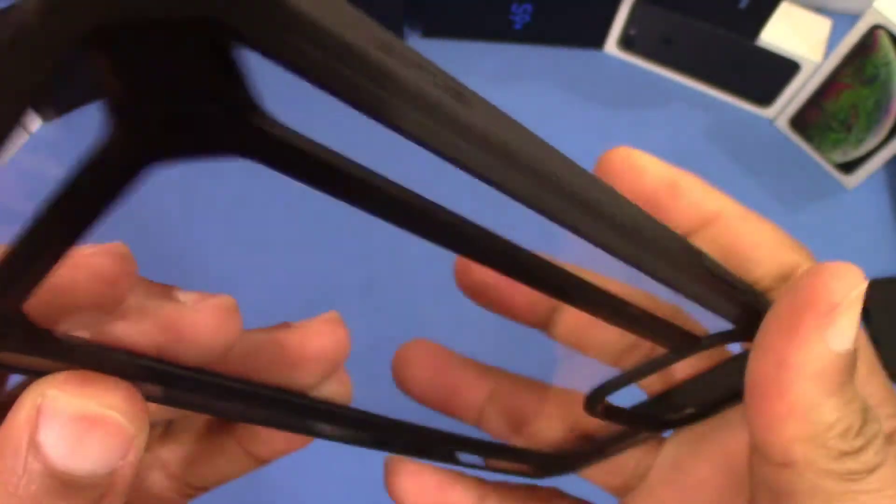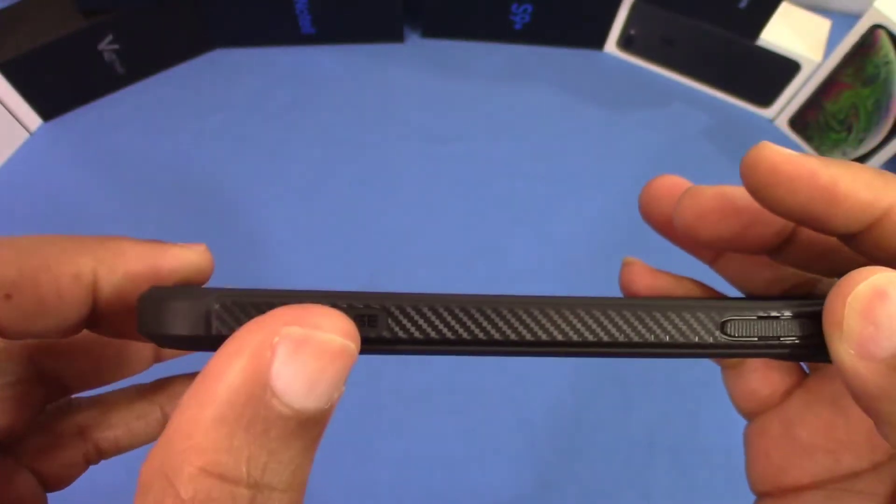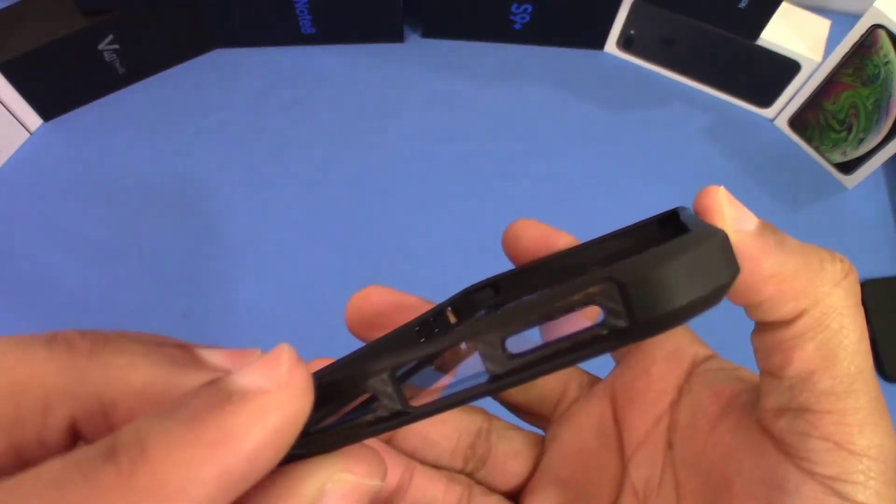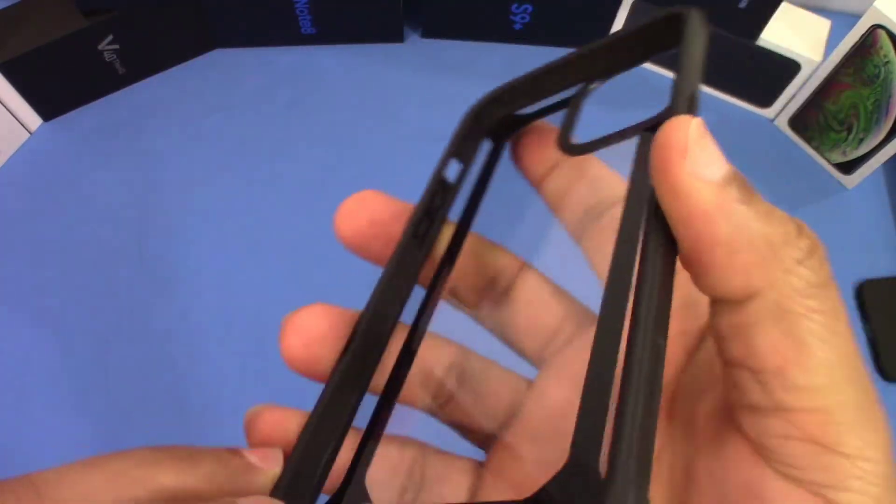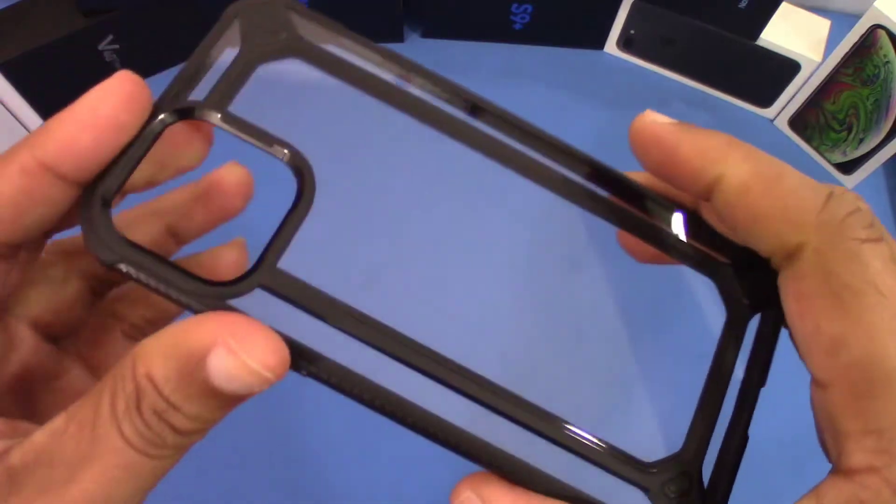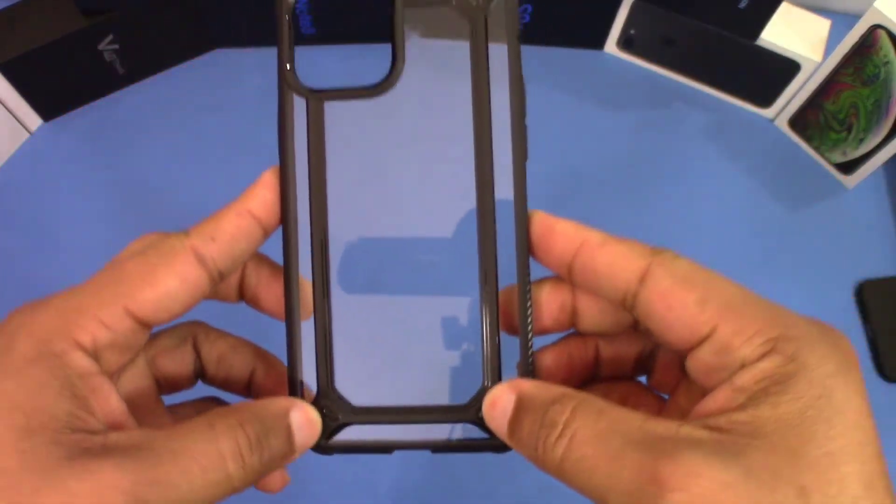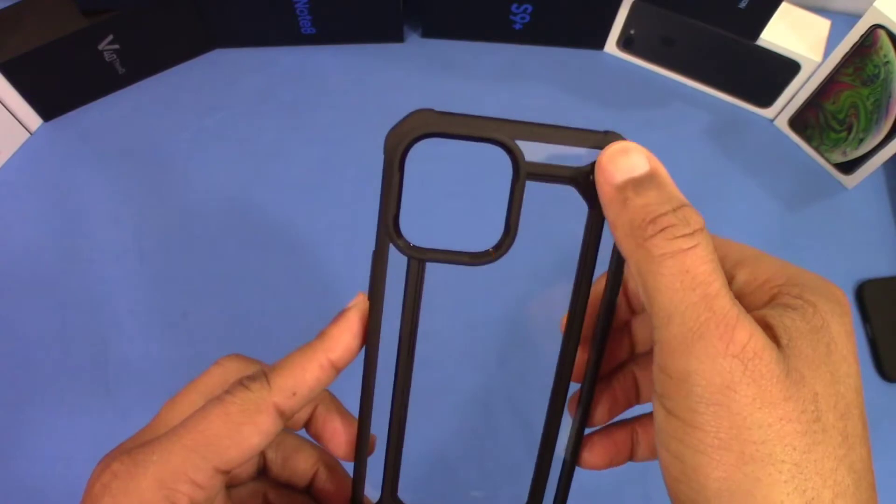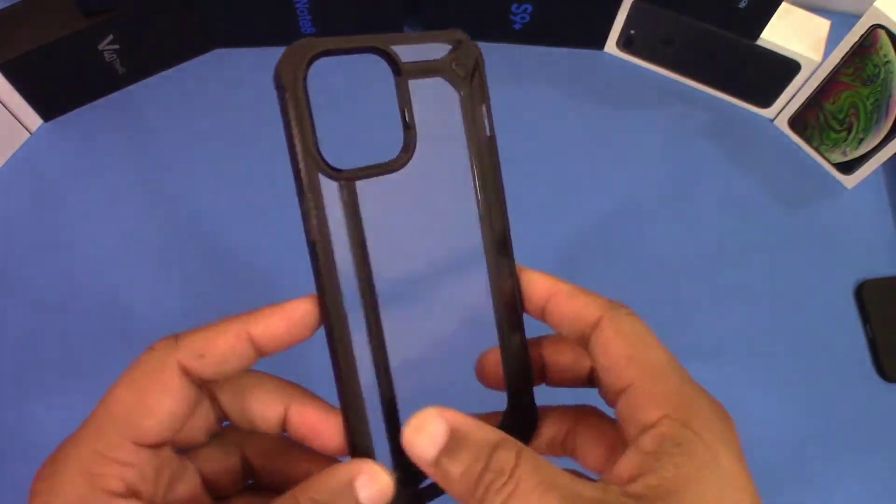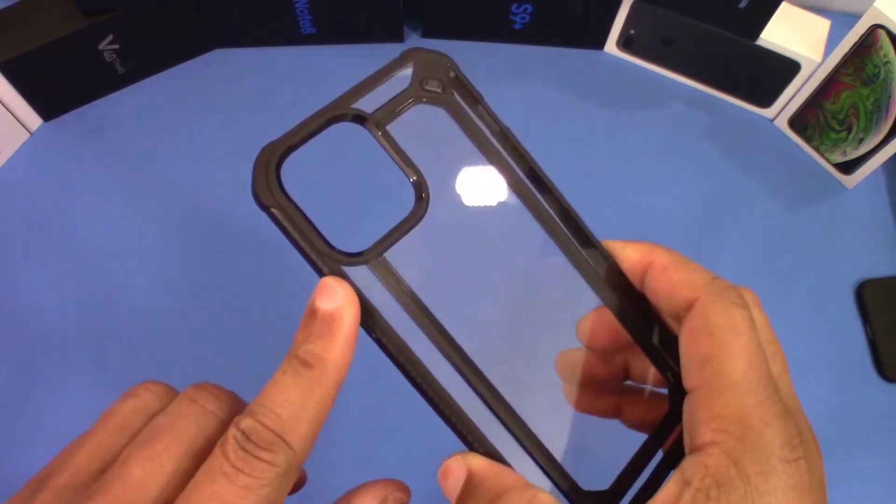Supcase branding on this side, right there. Power button. It's a TPU type with a polycarbonate back, clear back. But I like the design right there. Almost look like the Fusion X case, right, but this is pretty sleek. Alright.